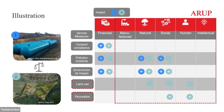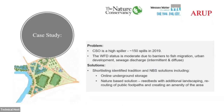Just to illustrate how this might stack up when we look at a gray solution versus a nature-based solution: on the screen you can see an option looking at CSO spills. The first option is to put in some larger storage tanks, whereas the second option might be to provide some green attenuation space. Traditionally, if we just looked at the financial and manufactured columns, we'd be looking at things like consent compliance, pollution incidents, environmental impacts purely from a financial standpoint — so things like the fine to the water utility if they pollute the watercourse. However, if you take into account the natural, social, human, and intellectual benefits, you can include things like the social value of pollution, the social value of providing additional green space, and the value of having additional recreation space that people can go and enjoy.